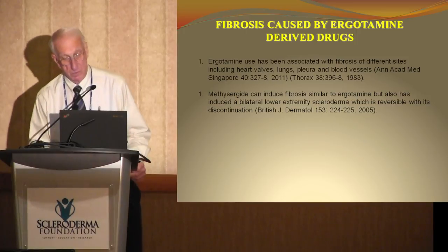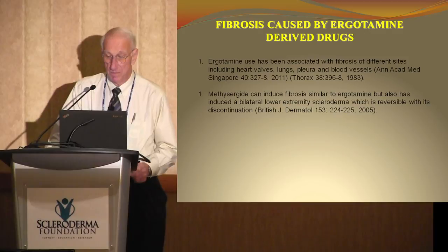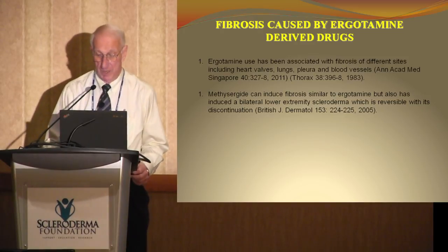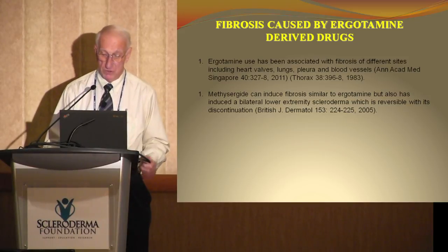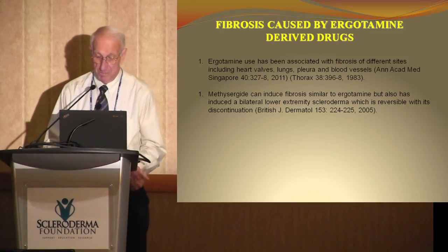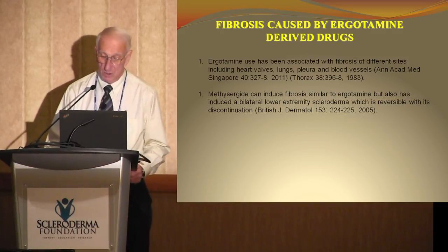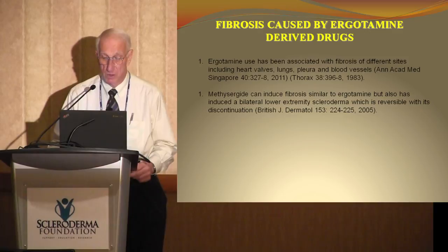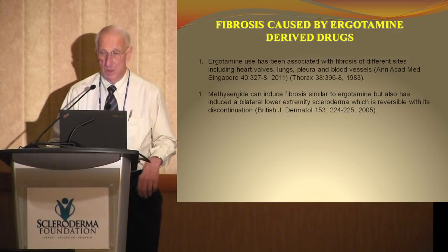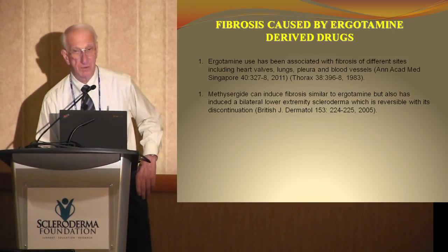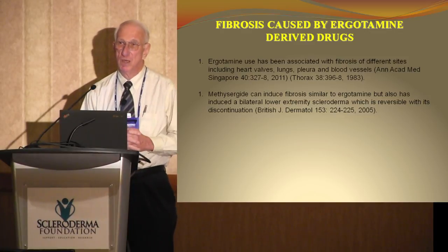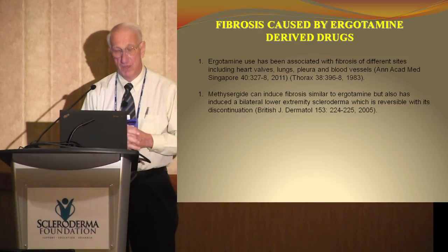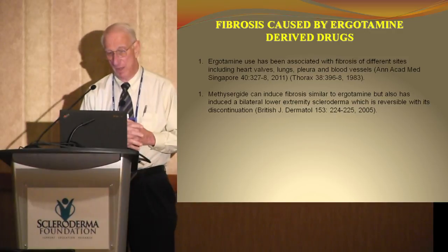Ergotamine compounds have been associated with fibrosis in different sites, including the heart valves, the lungs, the lining of the chest called the pleura, and also blood vessels. This has been reported by several different groups. Methysergide, which is related to ergotamine, causes similar fibrosis and induced a scleroderma-like change in bilateral extremities that was reversible, pretty much, with discontinuation of its use. These compounds, the ergotamines and methysergide, induce vascular constriction, particularly in the arterioles of the body. So you have decreased oxygenation of tissues, and a lot of observations over the years have shown that decreased oxygen is one of the things that will cause fibroblasts to start making a lot of collagen. So this may be at the basis of this.